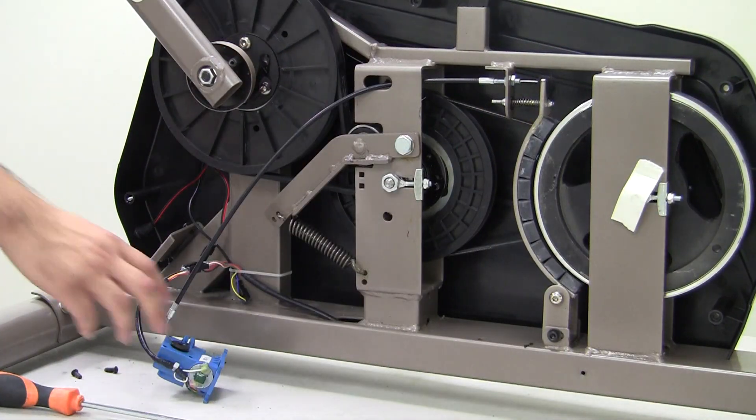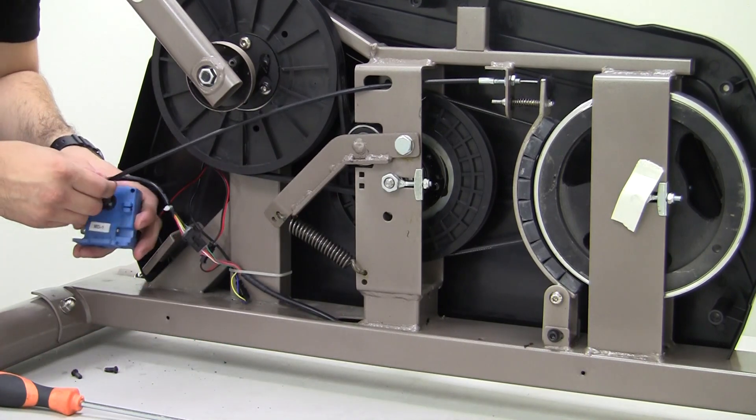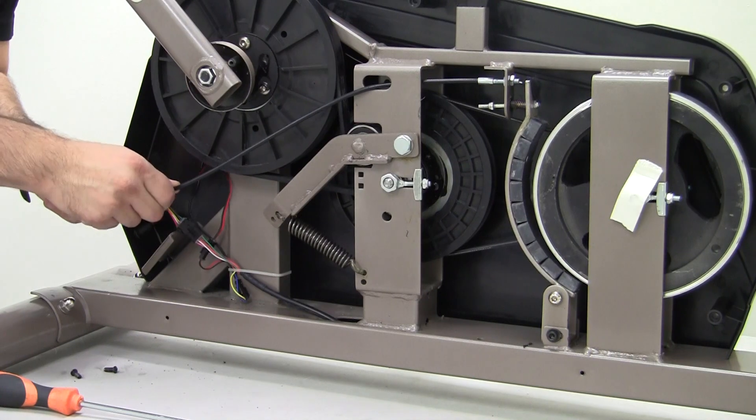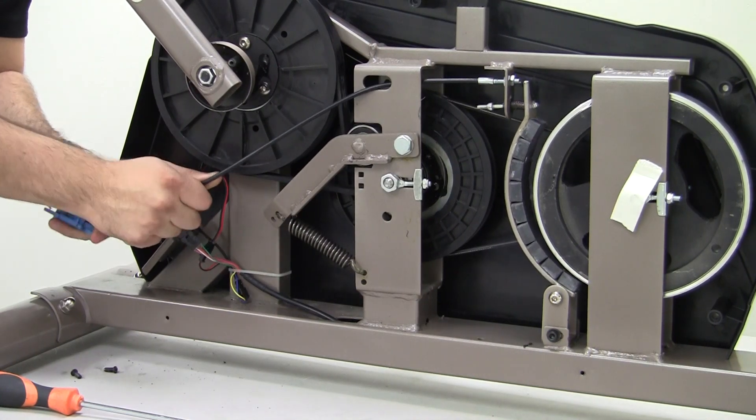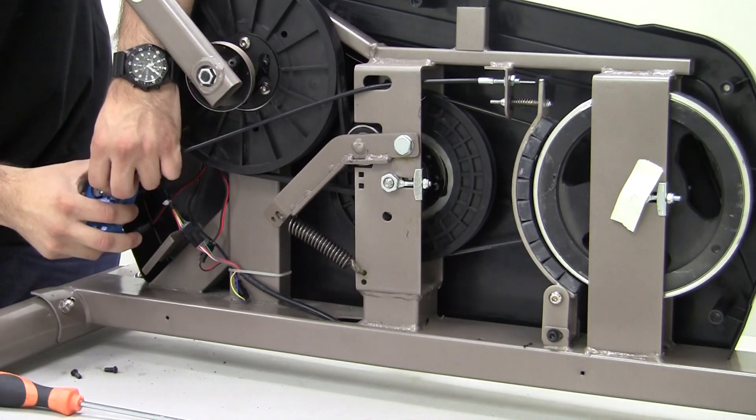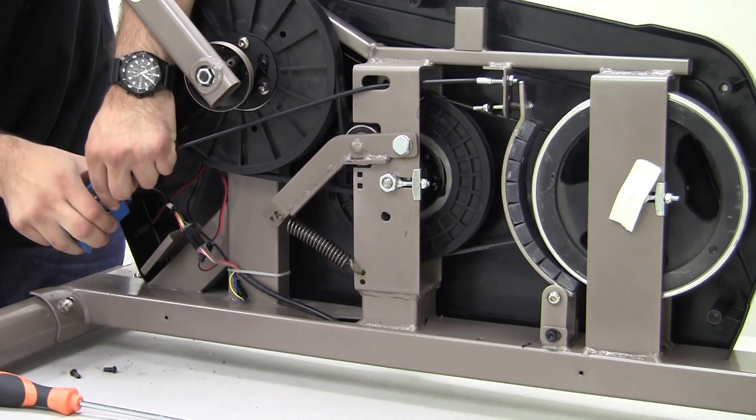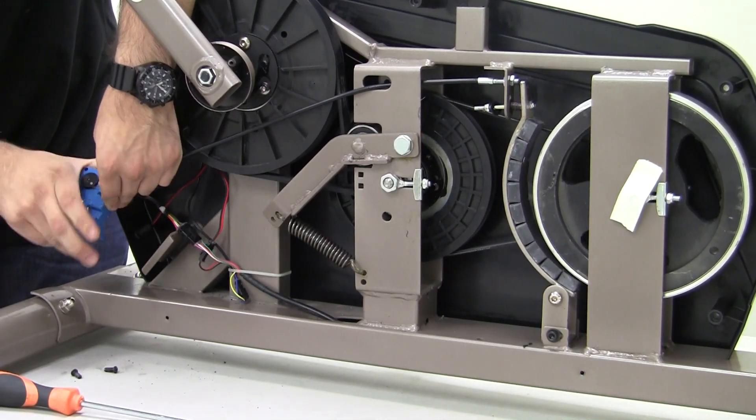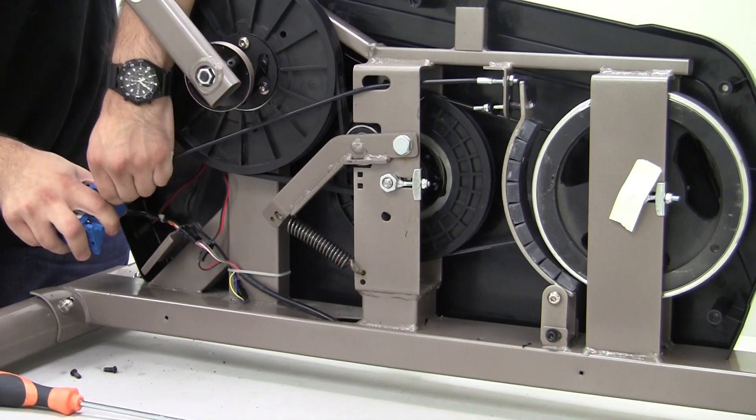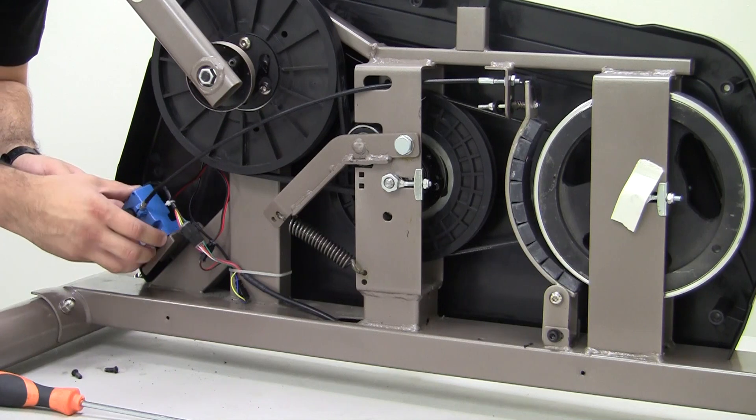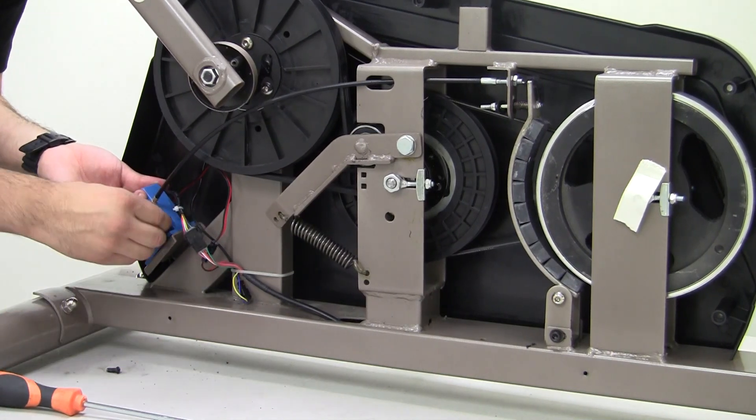Now we're going back to the other side with the motor. Coil it one more time to secure it under. Using the same screws, secure it onto the frame.